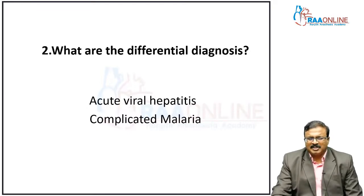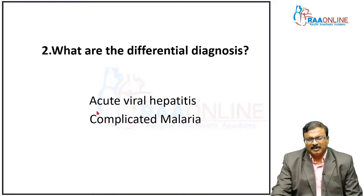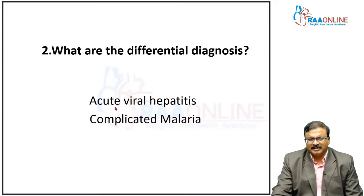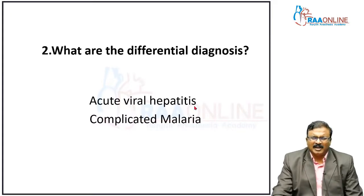What is not very likely is acute viral hepatitis. In acute viral hepatitis, high grade fever is not very common. What you see is low grade fever with nonspecific prodromal symptoms, and icterus will definitely be there. Persistent high grade fever in acute viral hepatitis is uncommon; if at all present, it suggests cholangitis — so it is very rare to see in acute viral hepatitis.